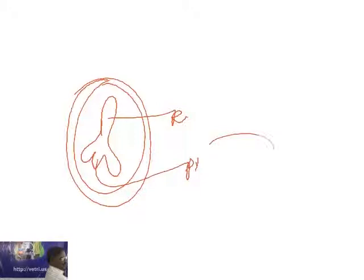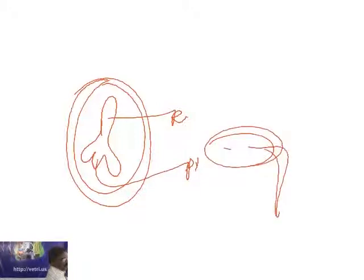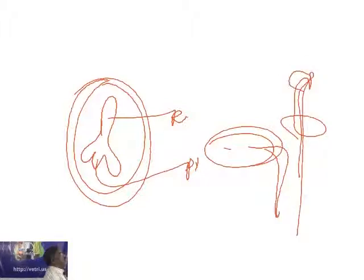The radicle is the part from which the root system develops. The central part is the plumule, from which the shoot system develops. So in the seed, from the radicle the root system develops, and from the plumule the shoot system develops.